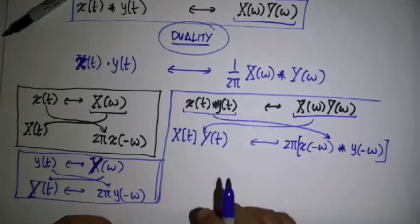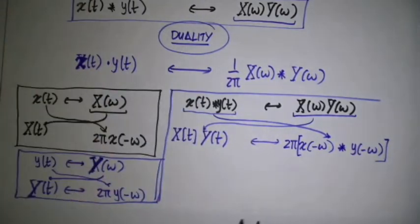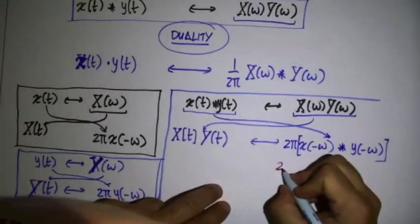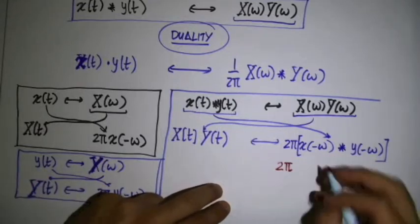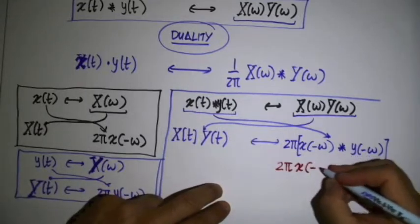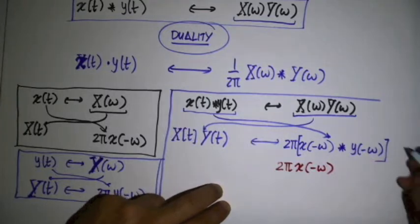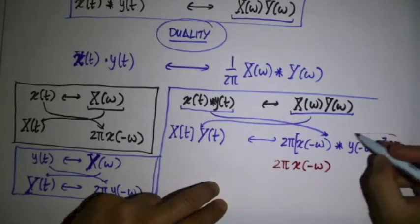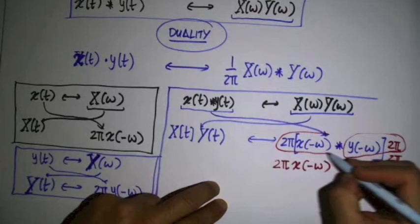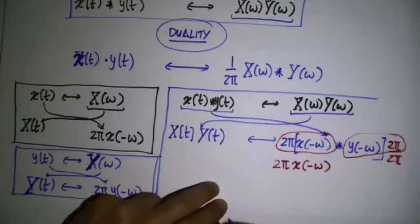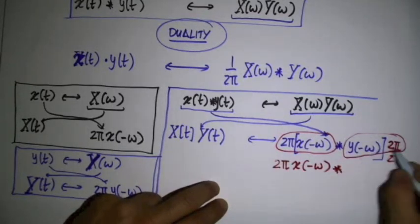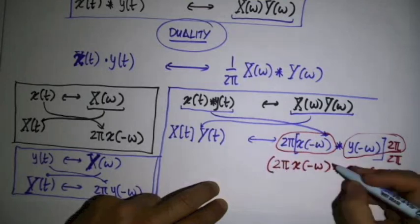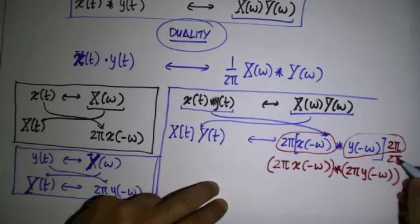But now you see that I can rewrite this expression as 2π x of minus omega. What do I do? I multiply and divide by 2π, so I can regroup this together. And this is already together. Then convolved with 2π y of minus omega, and then I'm left over with 1 over 2π.